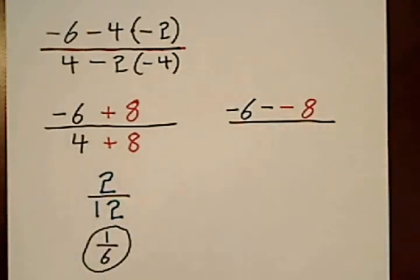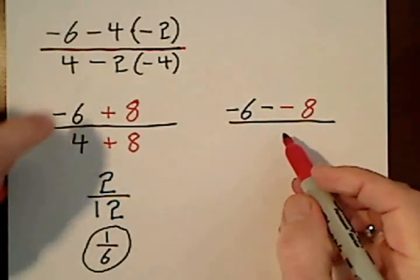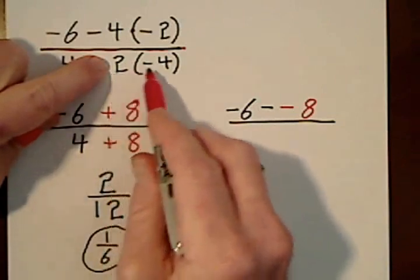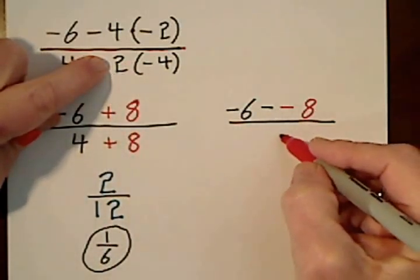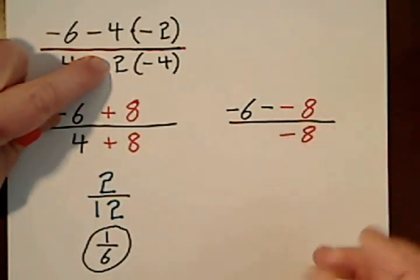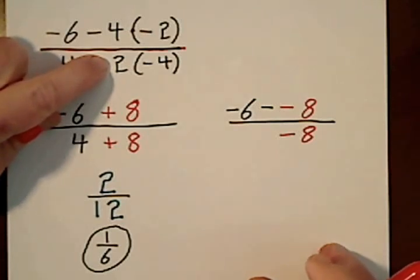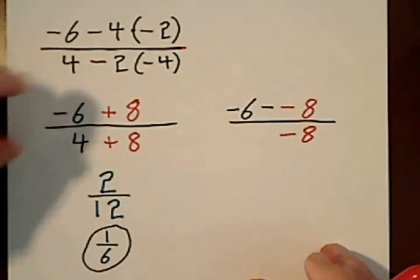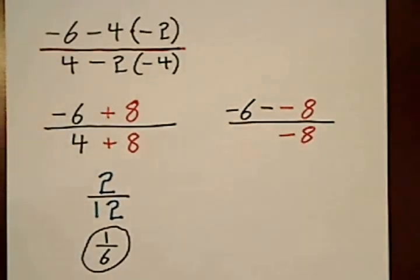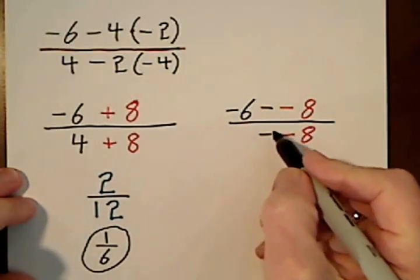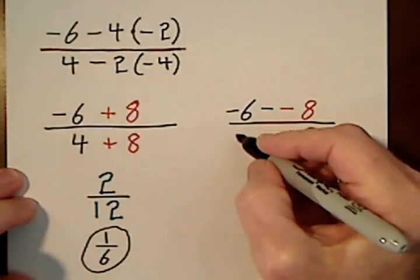And I'll just help you out with the denominator as well. If you just said 2 times negative 4, you would have negative 8. And then you would bring down whatever you hadn't touched. That negative sign or minus sign if you prefer, and then you would also bring down the 4.